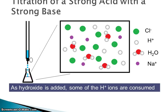We still have our spectator ions — the chloride ions are a spectator ion, and we're adding sodium ions from the NaOH. So instead of having 10 H⁺ left, I've used up four of them; I've added four OH⁻ ions, made four water molecules, and now I have four Na⁺ ions in the picture models. It's important to understand what we have in solution at different points in the titration.